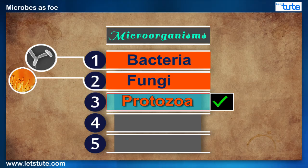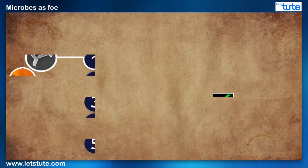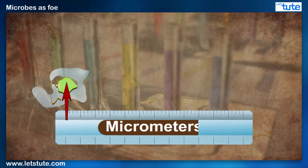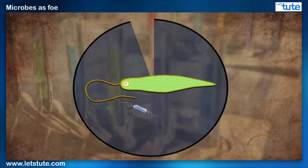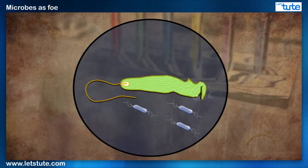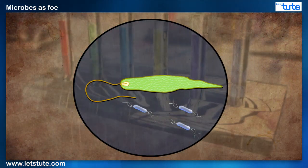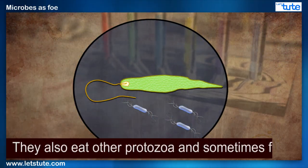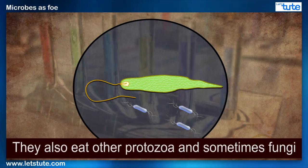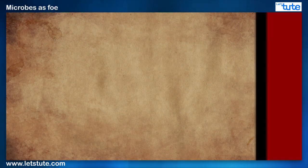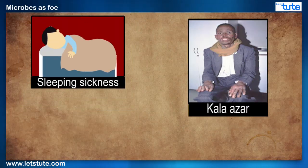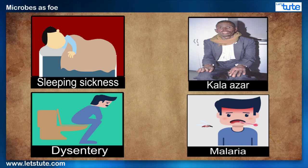Protozoa form the third group of microbes. Protozoa means 'little animal' as they vary in size from micrometers to centimeters. They are interesting because they mainly feed on bacteria but they also eat other protozoa and sometimes fungi. Sleeping sickness, kala-azar, dysentery, and malaria are a few diseases caused by them.